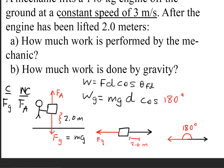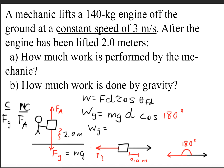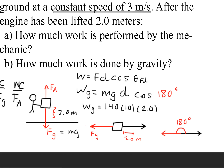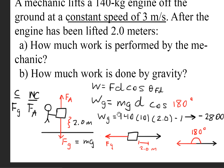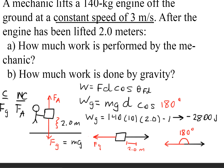If we continue solving this, mg is 140 times 10 meters per second squared, multiplied by the displacement of 2 meters, and cosine of 180 is negative 1. So our answer is negative 2,800 joules. This makes sense because gravity is opposing — it's trying to bring the system back down, so it's doing negative work in this case.